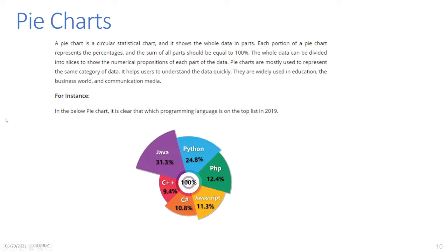Pie Charts: A pie chart is a circular statistical chart that shows the whole data in parts. Each portion of a pie chart represents percentages and the sum of all parts should be equal to 100%. The whole data can be divided into slices to show the numerical proportions of each part. Pie charts are mostly used to represent the same category of data, help users understand data quickly, and are widely used in education, the business world, and communication media. For instance, the pie chart shown makes clear which programming language was on the top list in 2019.